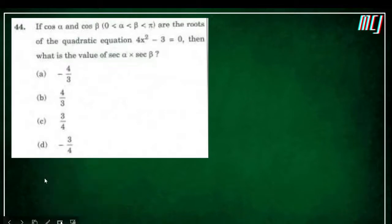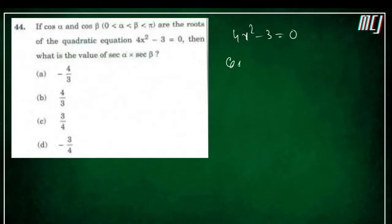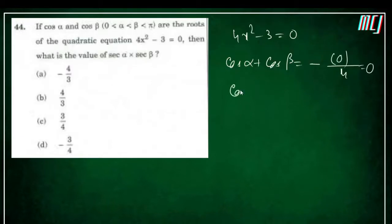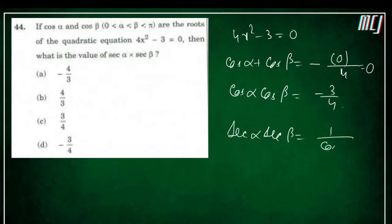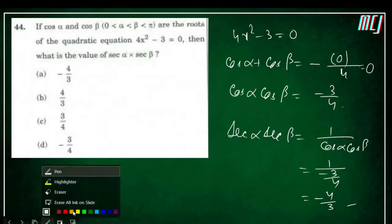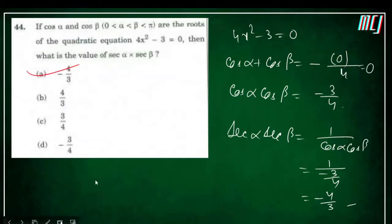Next question is simple. The quadratic equation is 4x² − 3 = 0, with roots cosα and cosβ. Sum of roots = 0/4 = 0; product of roots = −3/4. Therefore secα·secβ = 1/(cosα·cosβ) = 1/(−3/4) = −4/3. Answer is the first option.